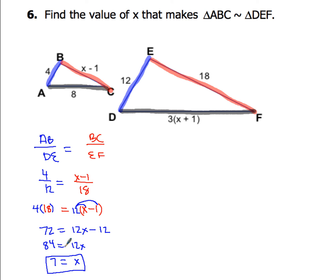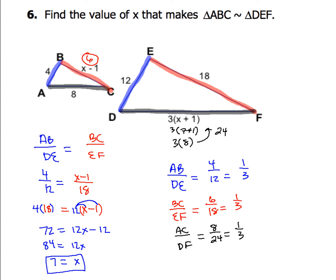Now plug in 7 for X. BC = 7 − 1 = 6. For the other side, 3(7) + 1 = 3 × 8 = 24, so DF = 24. Now check: AB/DE = 4/12 = 1/3, BC/EF = 6/18 = 1/3, and AC/DF = 1/3 as well. They all reduce down to 1/3.